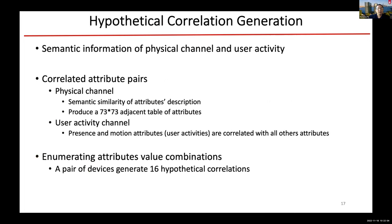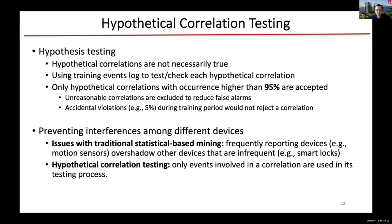For hypothetical testing, we need to get data from the real home — basically the logs of IoT events and IoT commands. We collect all the event logs and command logs. If we have a hypothetical correlation — say, if a smart switch turns on, the power meter should read high because the switch is connected to an appliance — we check the log over a week or two to see if these two events happen very close to each other for a high percentage. In our research, we chose 95%. If it happens more than 95% of the time, we consider the correlation true; if not, we exclude it.